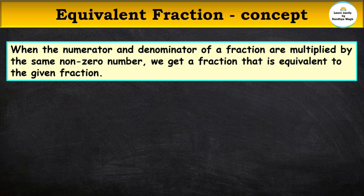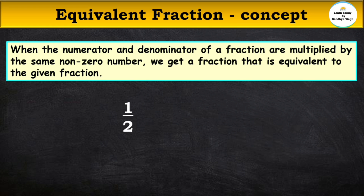How do we find an equivalent fraction from a given fraction? When the numerator and denominator of a fraction are multiplied by the same non-zero number, we get a fraction that is equivalent to the given fraction. Note that we should not multiply by zero — only non-zero numbers are used.